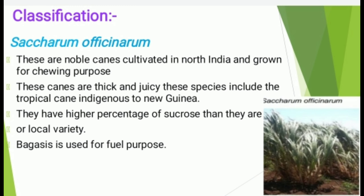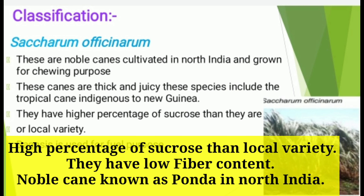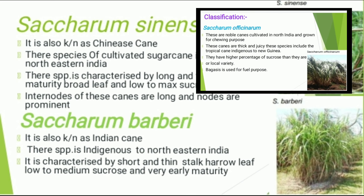Classification of Sugarcane — Saccharum officinarum: These are noble canes cultivated in northern India and grown for chewing purpose. These canes are thick and juicy. These species include tropical cane, indigenous to New Guinea. They have a higher percentage of sucrose than the desi or local varieties. Bagasse is used for fuel purpose.